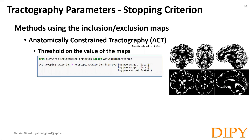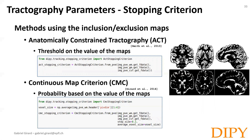There are two methods implemented in DIPY that use inclusion and exclusion maps. The anatomically constrained tractography (ACT) interpolates the partial volume estimate map and uses a threshold on the white matter value to stop or continue the tracking. The streamline is included if the fraction of gray matter is higher than the fraction of CSF. The continuous map criterion (CMC) uses a similar approach but uses probabilities derived from the tissue fraction to determine whether the streamline should stop and whether it should be included or excluded from the final tractogram.